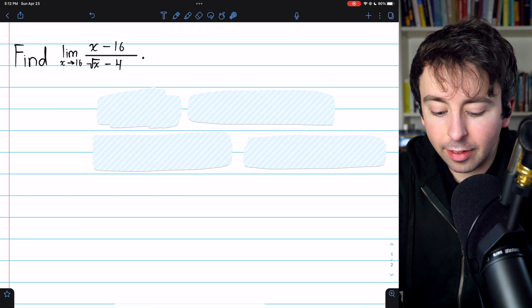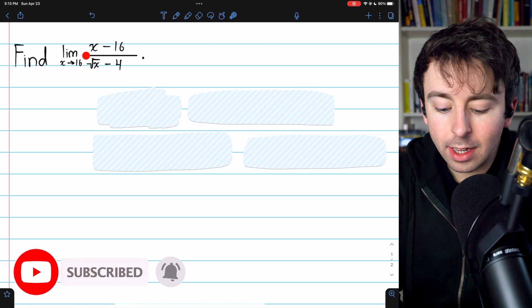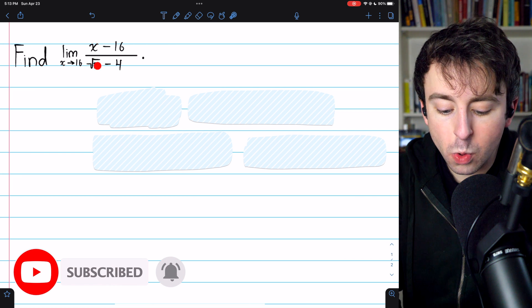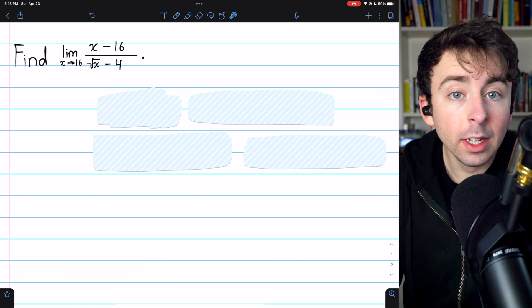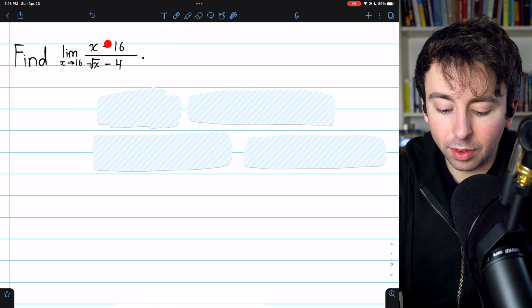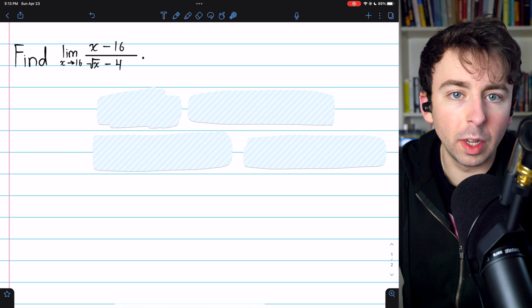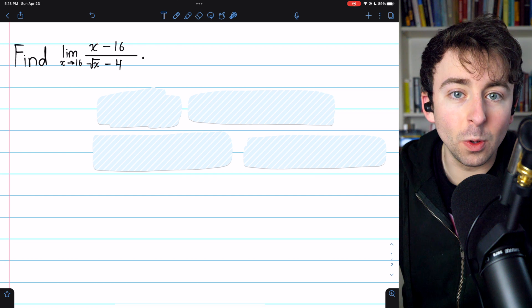We're going to find the limit as x approaches 16 of x minus 16 divided by the square root of x minus 4. Certainly, we can't solve this by substitution. Plugging in x equals 16 gives us zero over zero, which is an indeterminate form. So we're going to need to use some tricks.